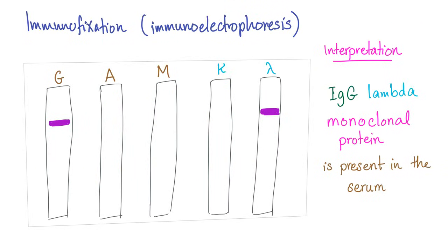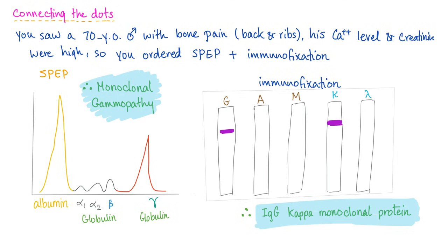Here is how immunofixation, the qualitative test, works: we have a plot with bands. When we see bands in IgG and lambda, the interpretation is that we have IgG lambda monoclonal protein in the serum. Now let's integrate both tests together. For a 70-year-old male with bone pain in the back and ribs, elevated calcium, and elevated creatinine — serum protein electrophoresis shows an M-spike, indicating elevated gamma globulins, consistent with monoclonal gammopathy.